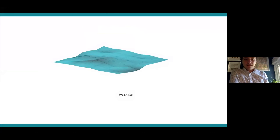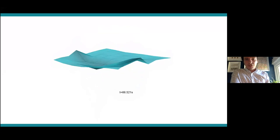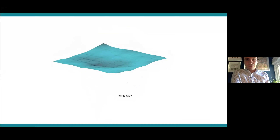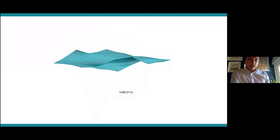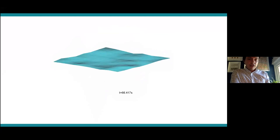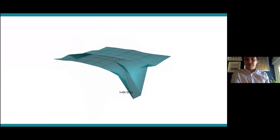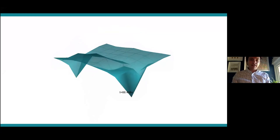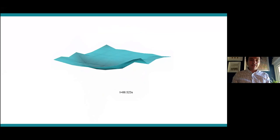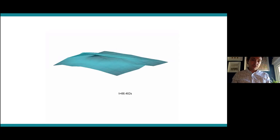I'd like to start with this video, which is a fasciculation potential captured by high density surface EMG, slowed down by about 80 times. What I really like about it is it shows the high temporal and spatial resolution of the amplitude profile that you can get with this setup. The computational power that this affords is immense.